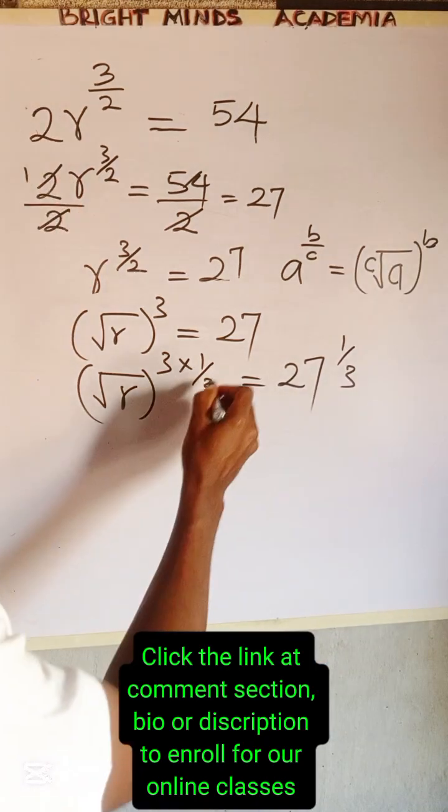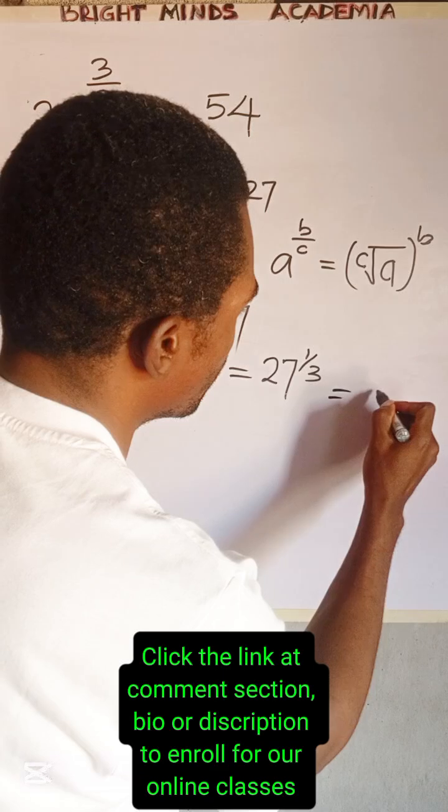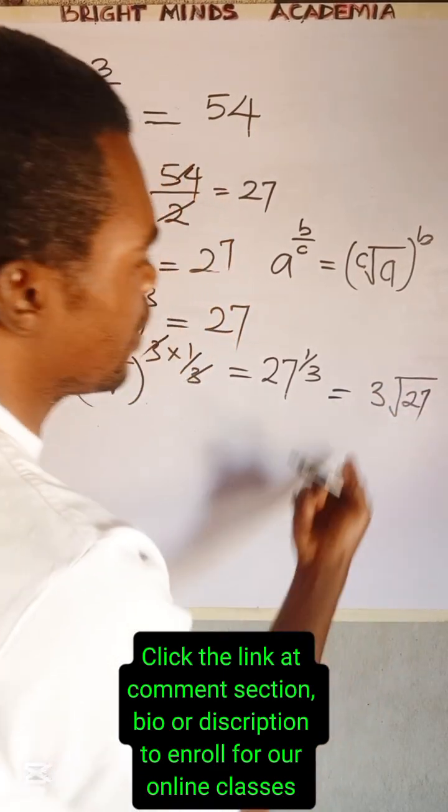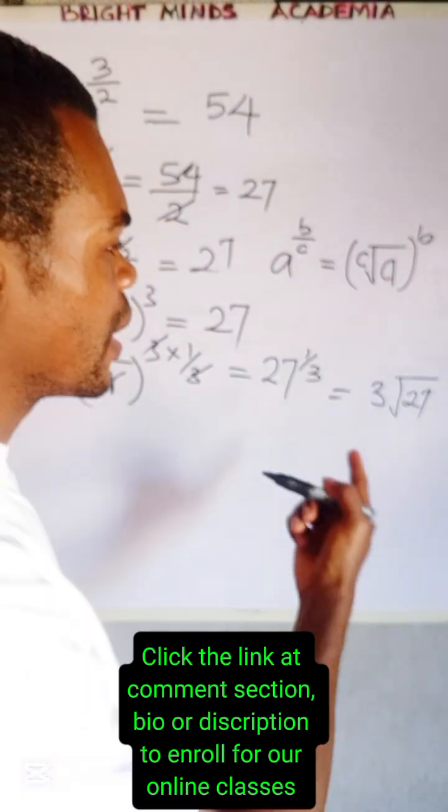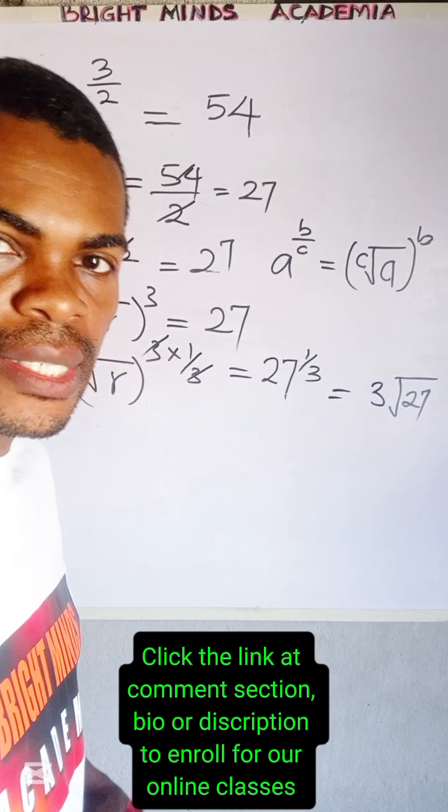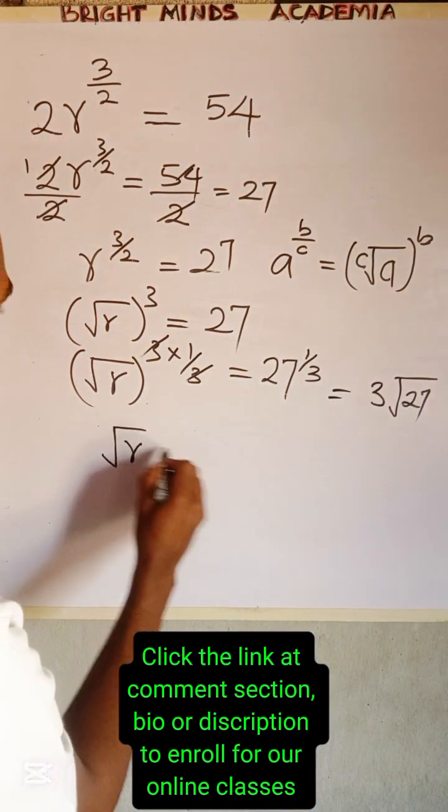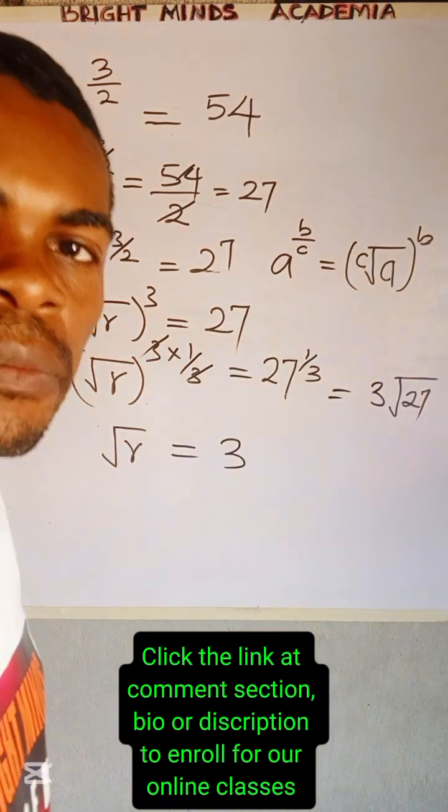So that 3 can cancel 3. This can also be written as the cube root of 27. Now the cube root of 27 is 3 because you can multiply 3 three times to get 27. So what we're left with is the square root of r which is equal to 3.